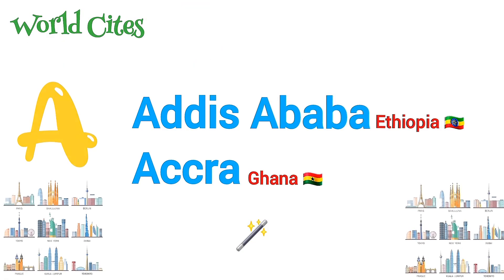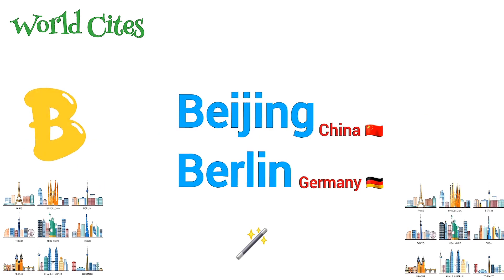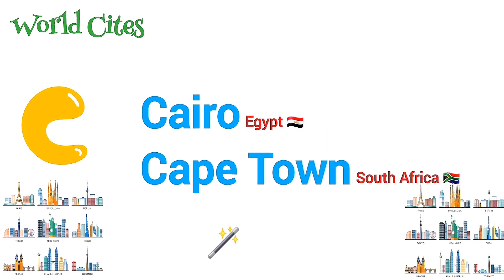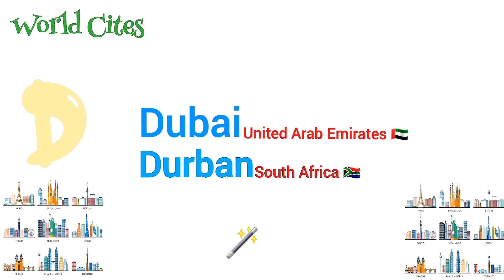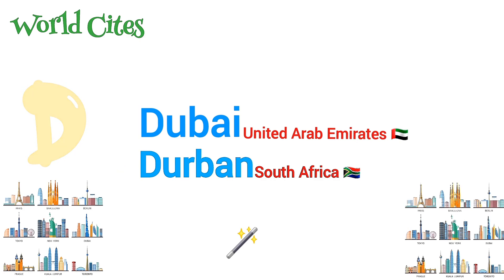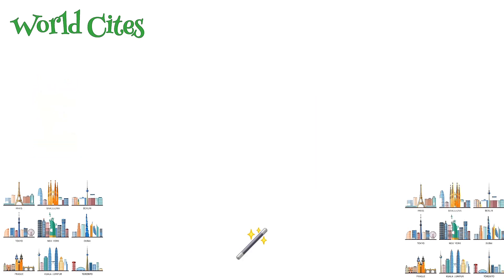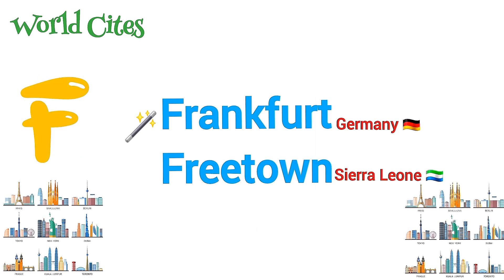Now on to world cities in alphabetical order. A is for Addis Ababa, Accra. B is for Beijing, Berlin. C is for Cairo, Cape Town. D is for Dubai, Durban. E is for Edinburgh, Enugu. F is for Frankfurt, Freetown.